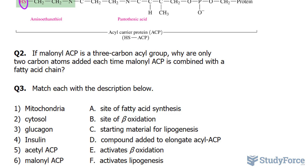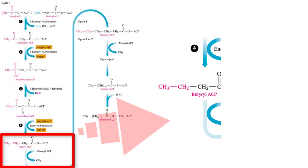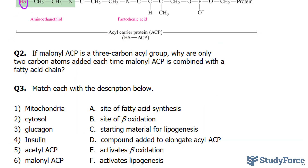Fatty acids are made in the cytosol of the cell, and they're carried out in four reactions. The conversion of Malonyl ACP going to the new fatty acid being formed, plus the release of carbon dioxide, occurs in the fourth reaction of this cycle. That reaction is shown on your screen.